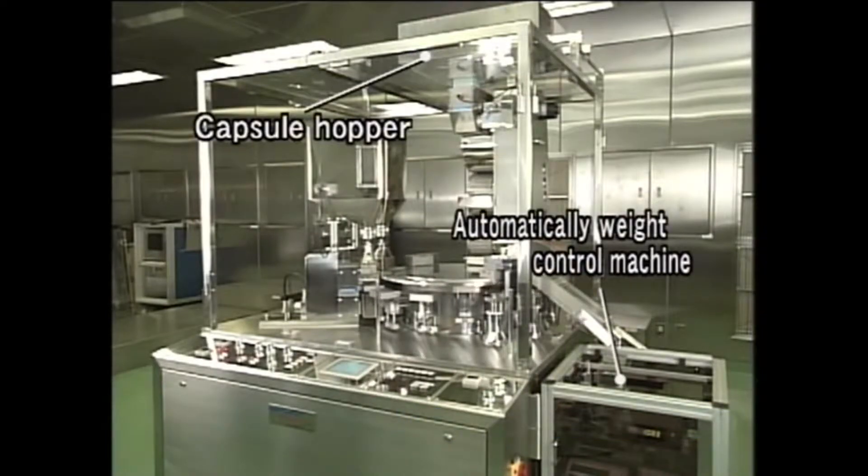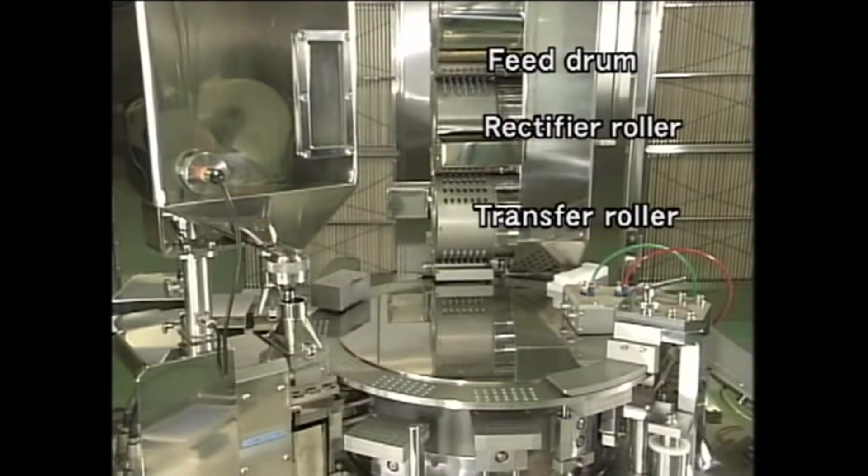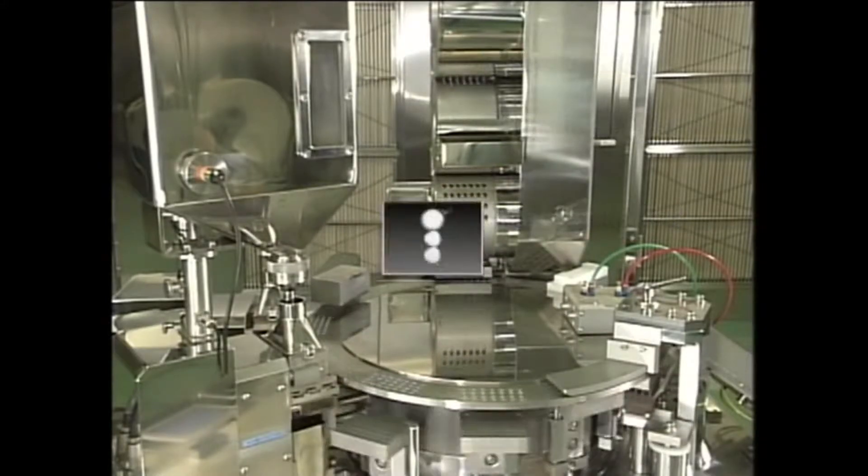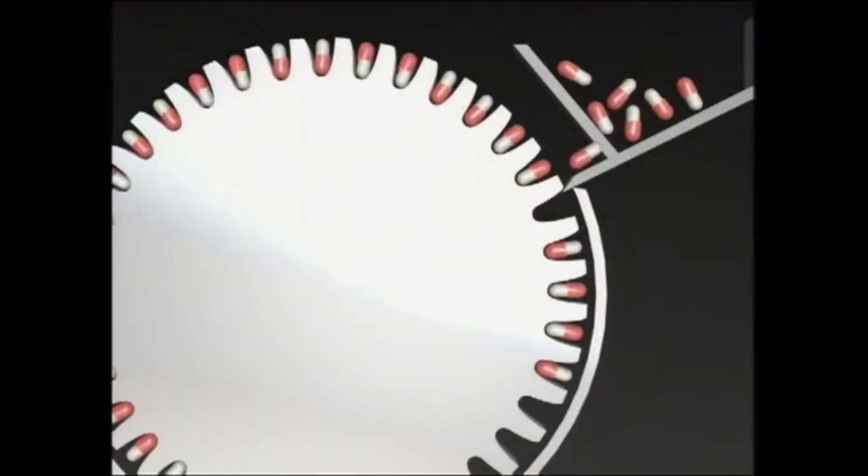First, applying a mechanism that controls the orientation, the empty capsules are transported from the hopper by the capsule rotary rectification system, which prevents any shortage of supply. This mechanism is QualiCAP's original technology with a worldwide patent.